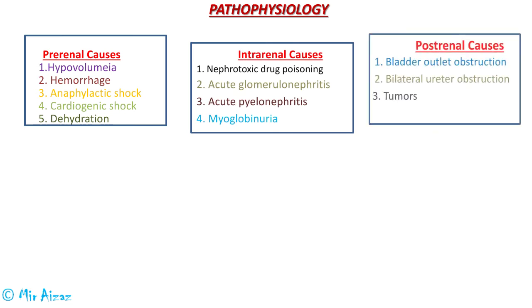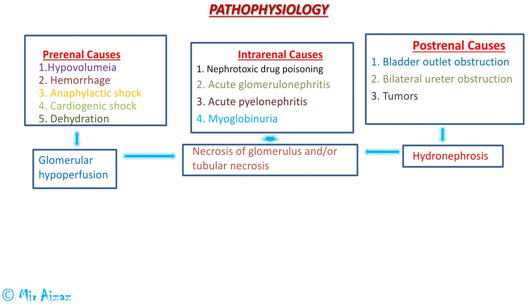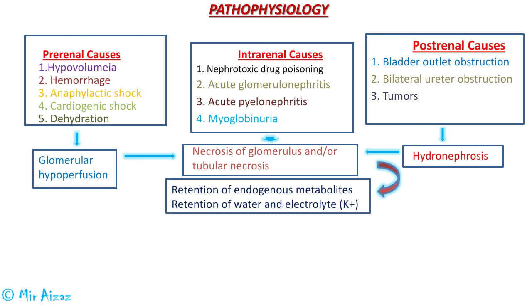In the pathophysiology, the pre-renal causes lead to glomerular hypoperfusion, meaning less blood flows to the glomerulus. The post-renal causes lead to hydronephrosis, which means fluid starts to accumulate in the kidneys. All these causes, including intrarenal causes, ultimately lead to necrosis of the glomerulus, which impairs the excretory function of the kidneys and leads to retention of waste materials inside the body. These waste materials are normally excreted from the blood with the help of the kidneys.